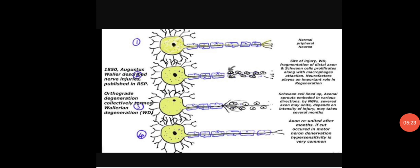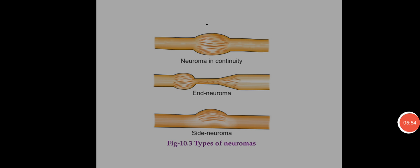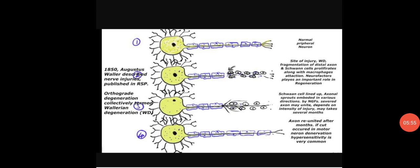As seen in the picture: the first image shows a normal peripheral neuron; the second shows the site of injury with Wallerian degeneration — fragmentation of the distal axon — and Schwann cells proliferating along with macrophages. Neurotrophic factors play an important role in regeneration. In the third stage, Schwann cells line up and axonal sprouts are embedded in various directions. By nerve growth factors, the severed axon may reunite depending on the intensity of injury, which may take several months.